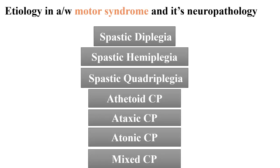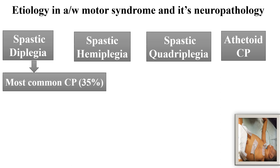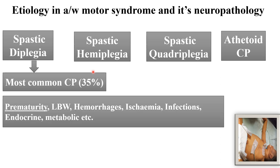Now the etiology associated with specific motor syndromes and neuropathology: spastic CP is the most common type of CP. Out of this, spastic diplegia is the most common form, present in around 35% of cases. Causes of spastic diplegia are prematurity, low birth weight, hemorrhage, ischemia, infections, endocrine and metabolic disorders, and it is mainly seen with a history of premature birth.